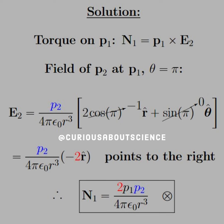If we use the right hand rule, we note that the torque applied is 2P1P2 over 4 pi epsilon naught R cubed going into the page.